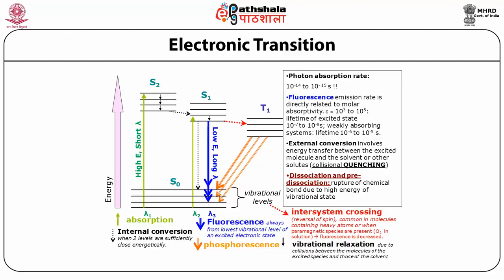Non-radiative relaxation processes are many, which we will discuss one by one. The first is vibrational relaxation: excitation usually occurs to higher vibrational levels of the target excited state. The excited molecules normally relax rapidly to the lowest vibrational level of the excited electronic state. These non-radiative processes are called vibrational relaxation. It occurs within 10⁻¹⁴ to 10⁻¹² seconds—a time much shorter than the typical luminescence lifetime—so such processes occur prior to luminescence.